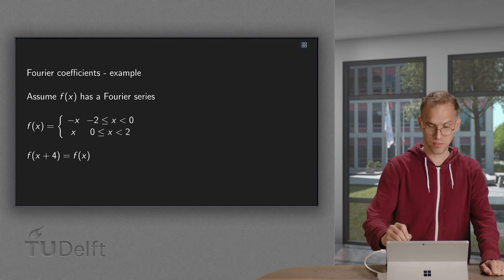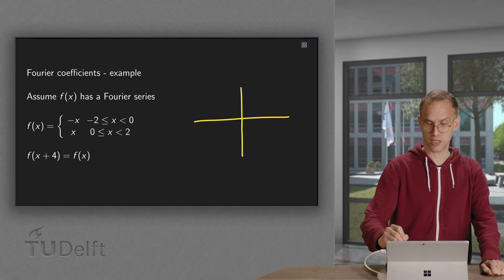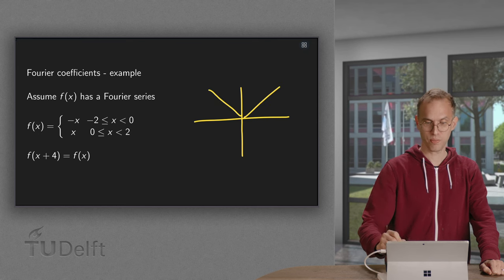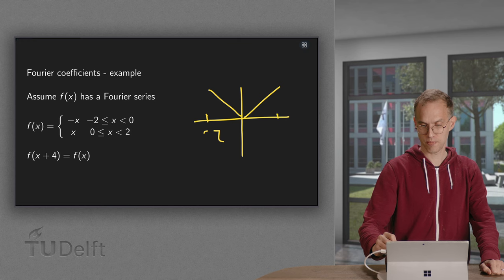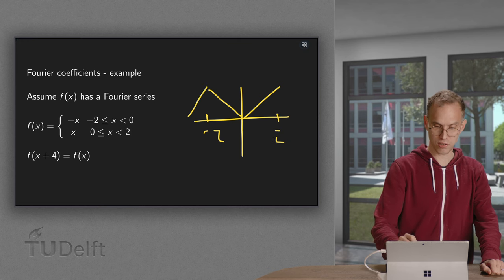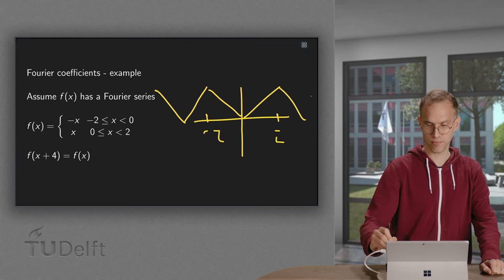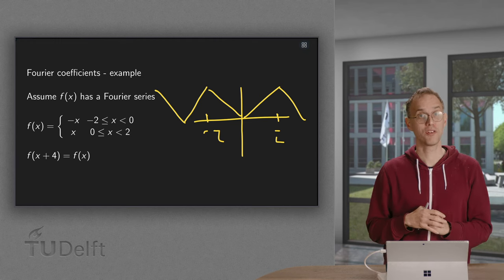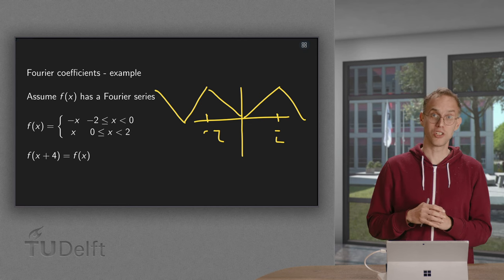So we have a function f of x. We take minus x between minus 2 and 0. We take x between 0 and 2, like this. And then we just repeat periodically, so it looks a bit like this. And so on and so forth. So we have a periodic function. Let us try to calculate its coefficients.